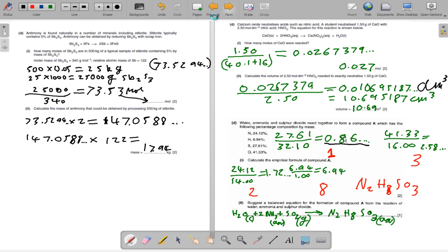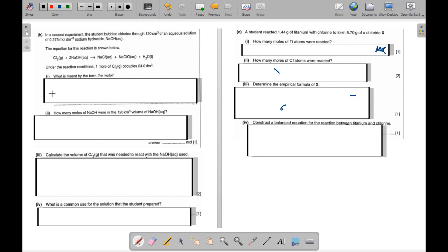Moving on now to the next set of questions. For this question, we have Cl2 plus 2 NaOH goes to NaCl plus NaClO plus H2O. One mole of Cl2 occupies 24 decimeters cubed. What is meant by determining the mole? How many moles of NaClO was in 120 cubed volume of NaOH? We need to calculate the volume of Cl2 that was needed to react with the NaOH used. What is the common use for the solution that the student had? The student reacted 1.44 grams of titanium with chlorine to form 5.7 grams of chloride X. How many moles of titanium was reacted? How many moles of chlorine were reacted? We need to determine the empirical formula for X and construct a balanced equation for the reaction between titanium and chlorine. I'll give you a five second pause and go for the answers in a bit.